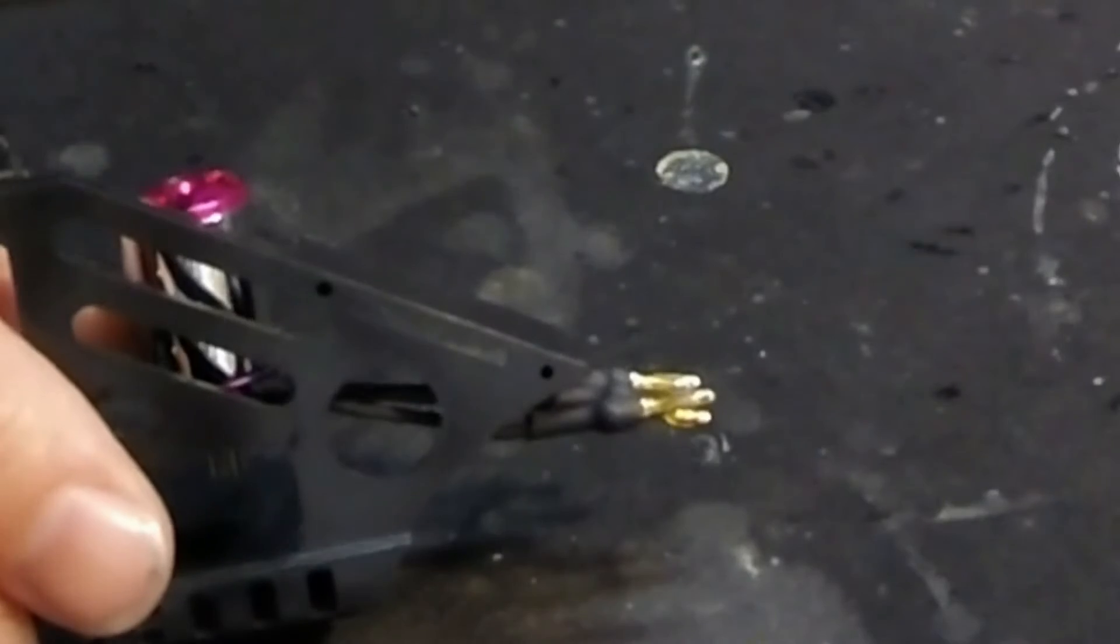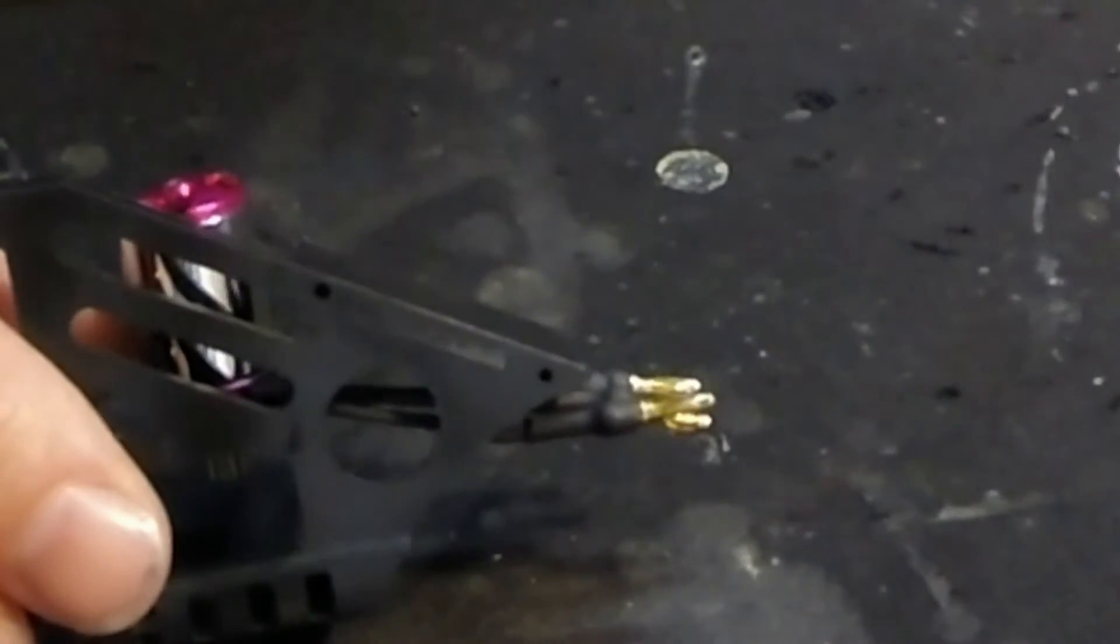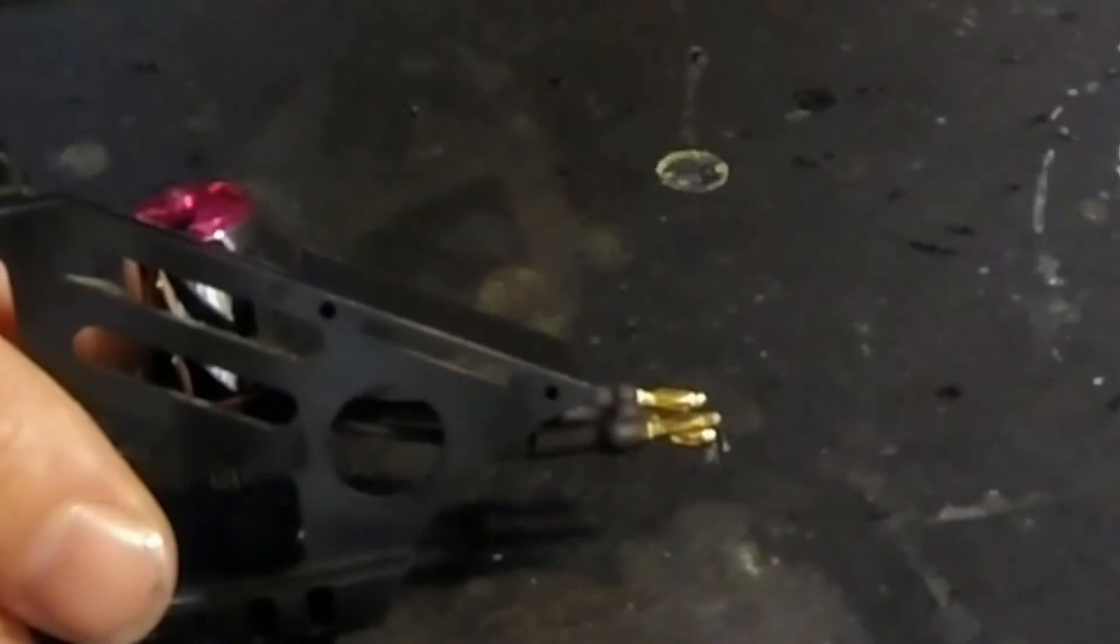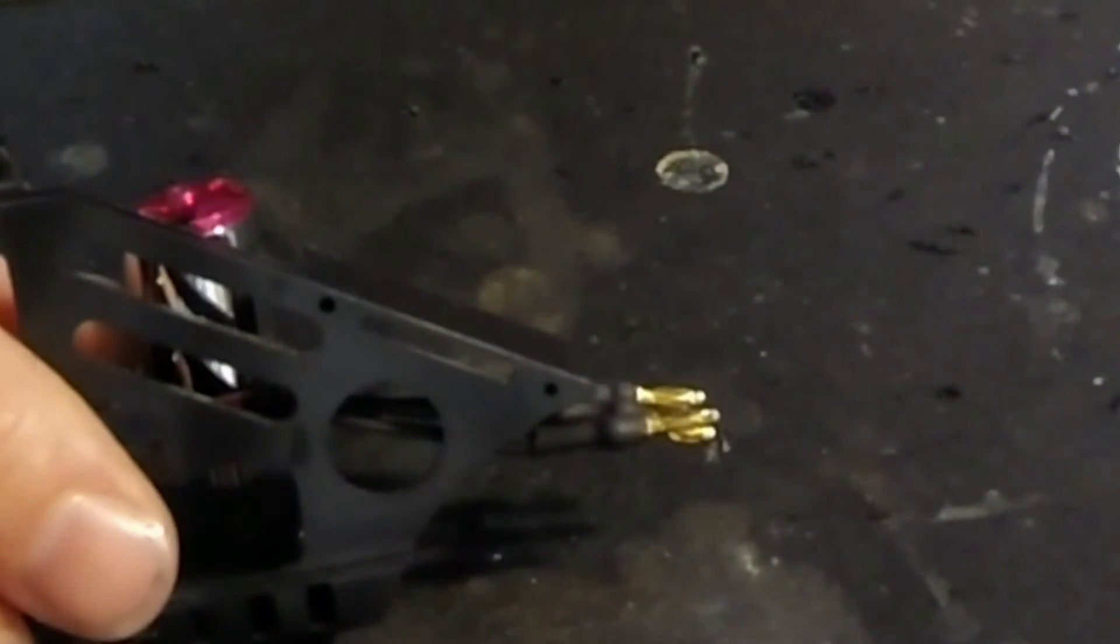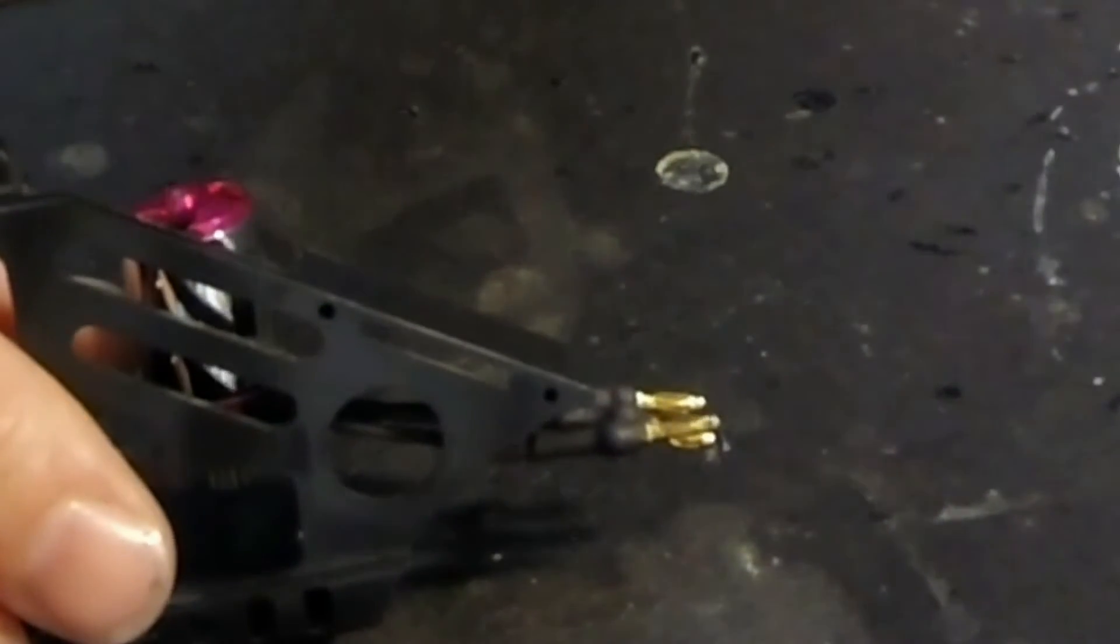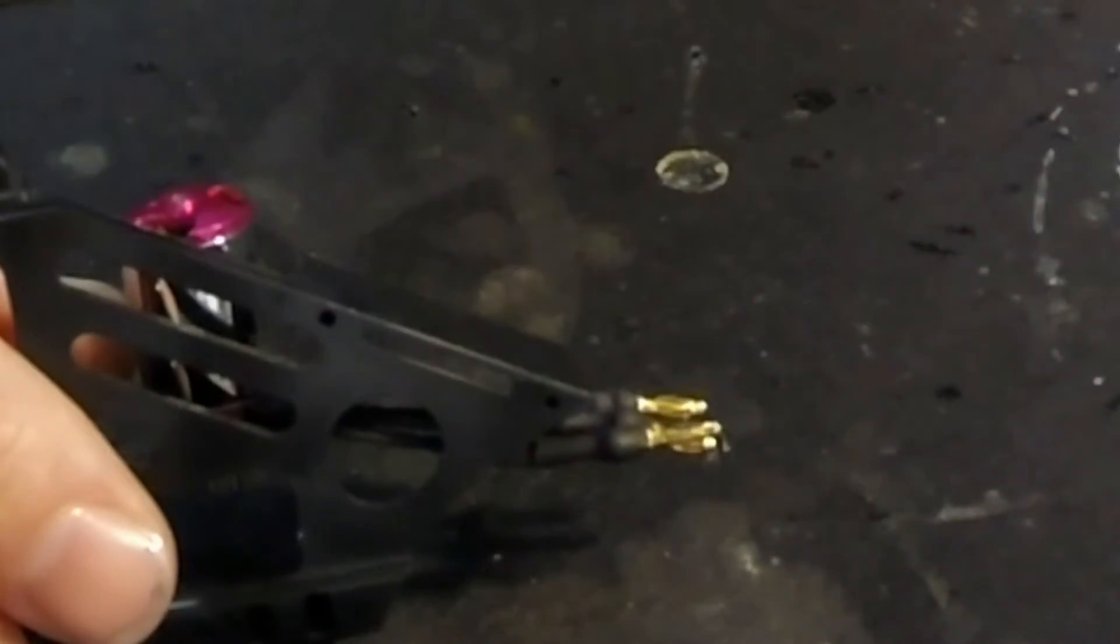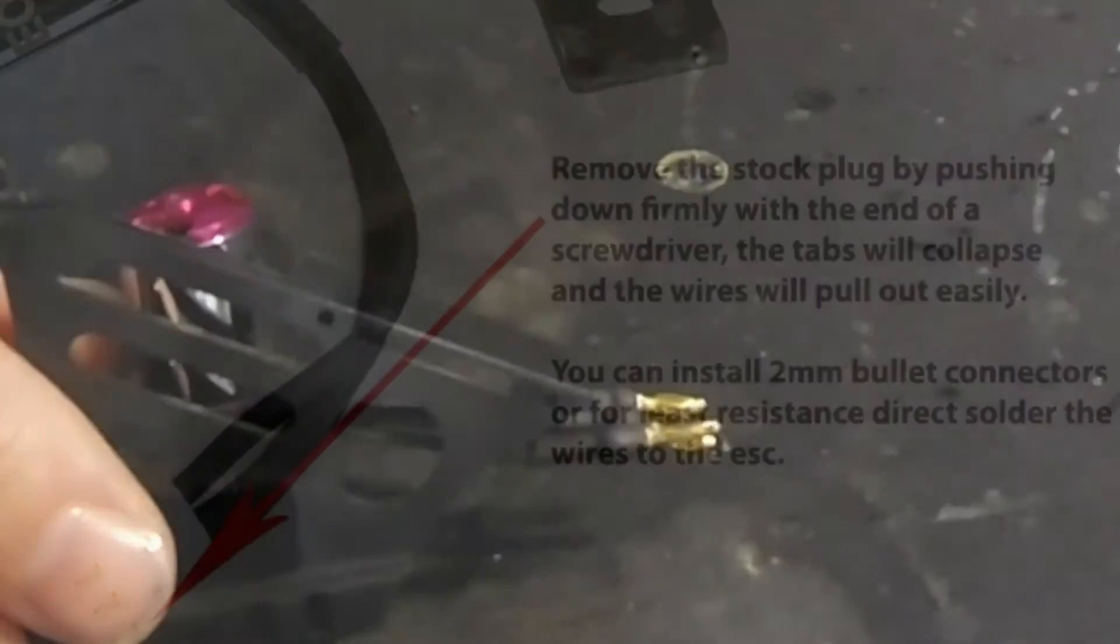Step five is to prep the motor connectors. The motor comes with a stock type connector installed. However, it's not recommended to use this connector. It is installed on there for factory QC checks only. The best method is to direct solder the motor wires right to the ESC. However, I have decided to use two millimeter bullet connectors. That way it's easier to remove the motor if I need to.